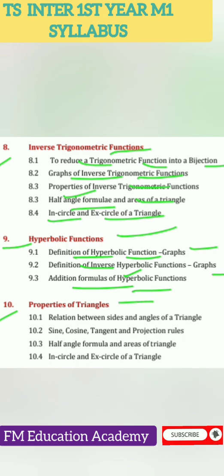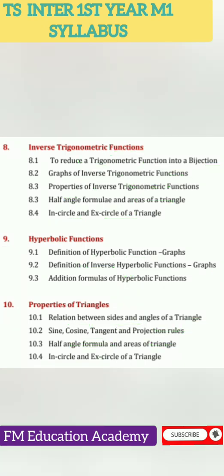Chapter 10 is properties of triangles: relations between sides and angles of a triangle, sine rule, cosine rule, tangent and projection rules, half angle formula and areas of a triangle, incircle and excircle of a triangle. So totally we have 10 chapters in Maths 1A for Intermediate First Year.